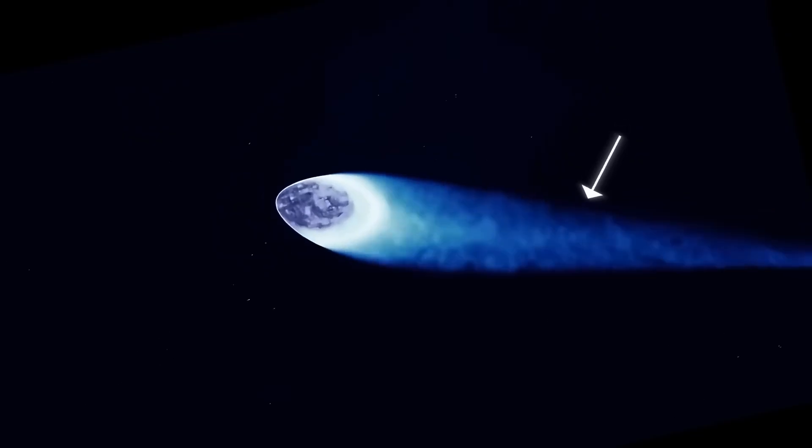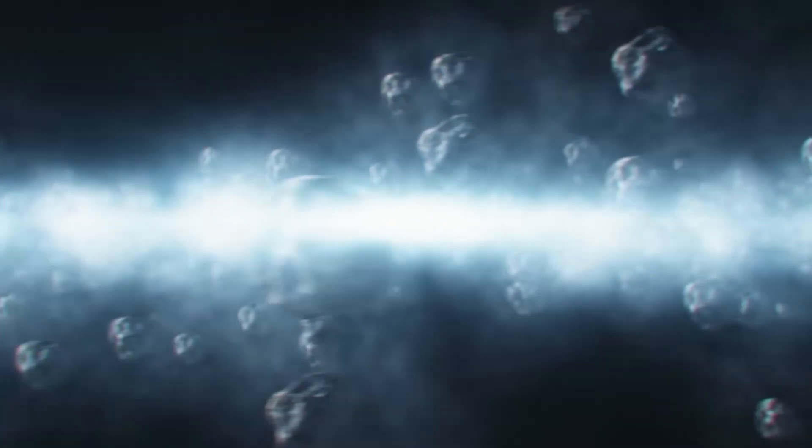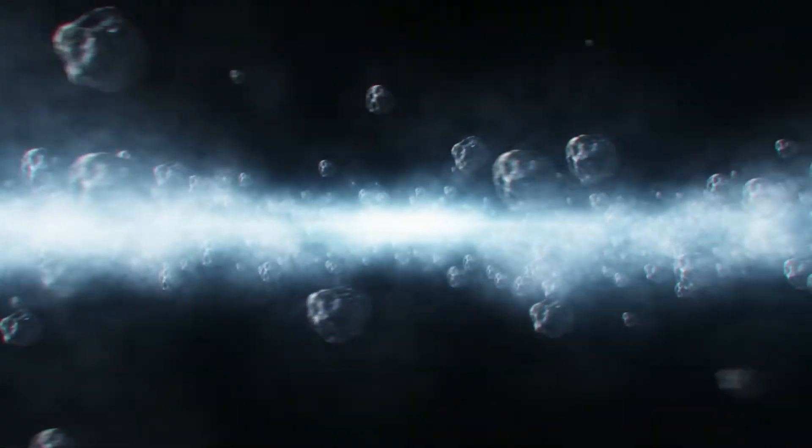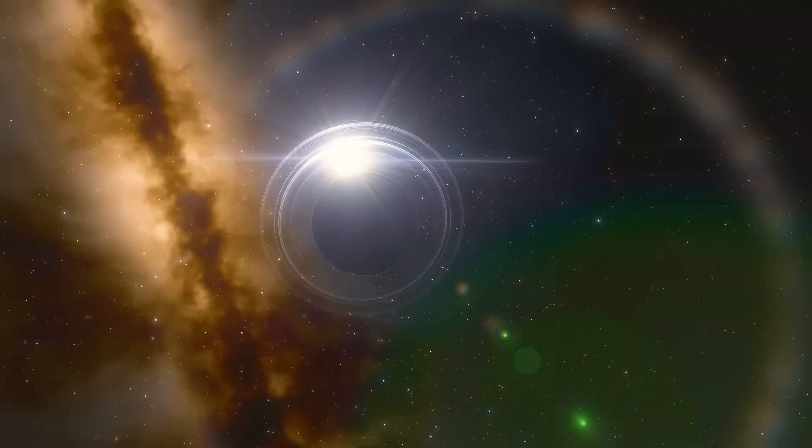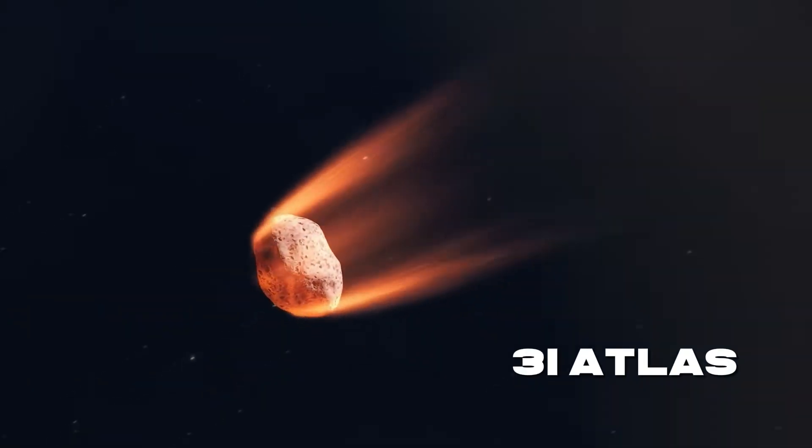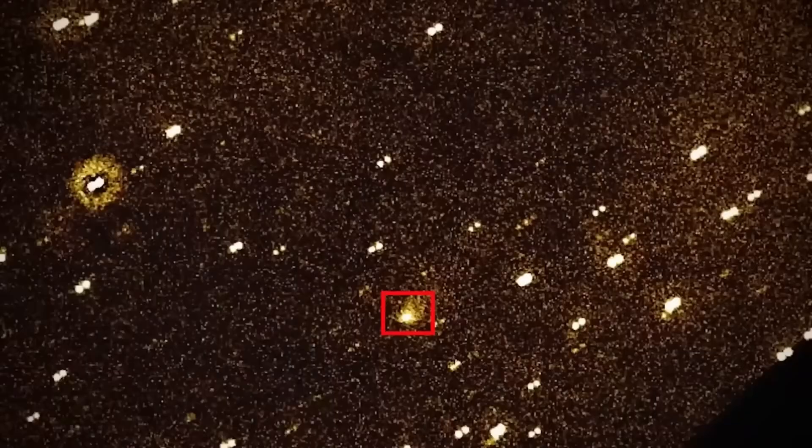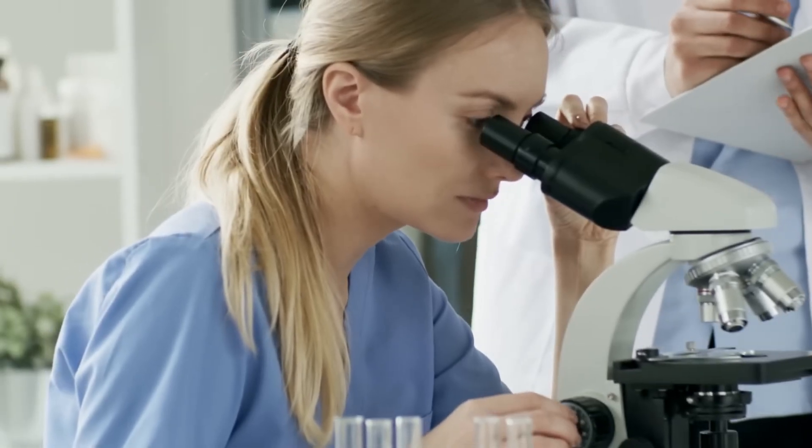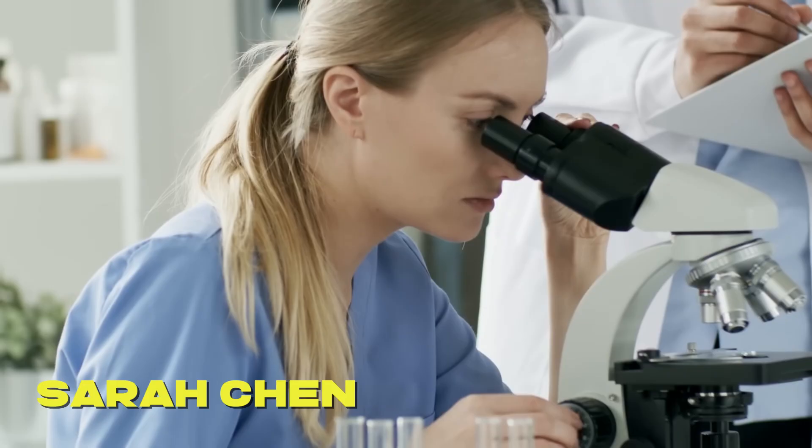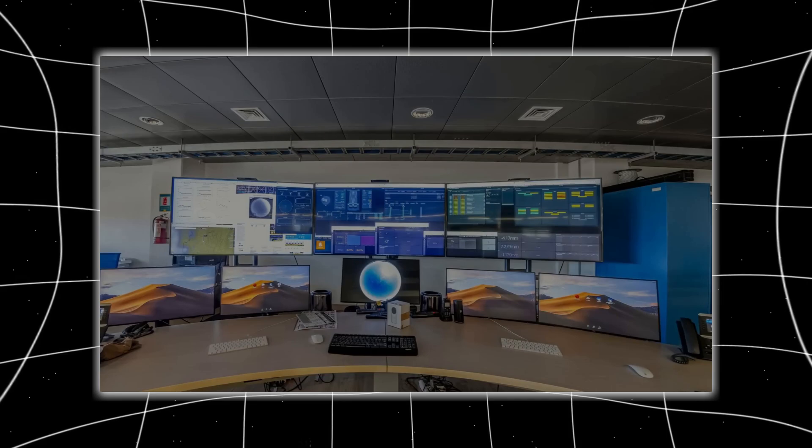Natural comets don't behave this way. When ice sublimates in the vacuum of space, it creates random, chaotic jets that push the parent body in unpredictable directions. 3I Atlas shows none of this chaos. The acceleration curve is smooth, controlled, almost mechanical in its precision. Mission analyst Sarah Chen at the Jet Propulsion Laboratory ran the numbers through every comet model in the database. None fit.